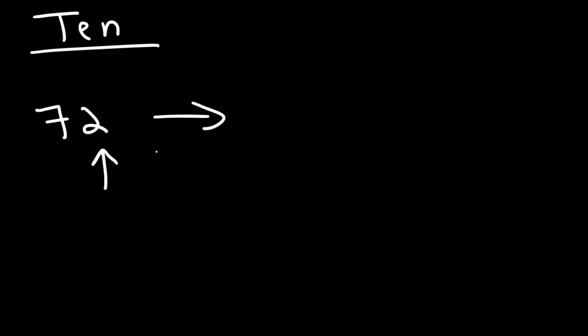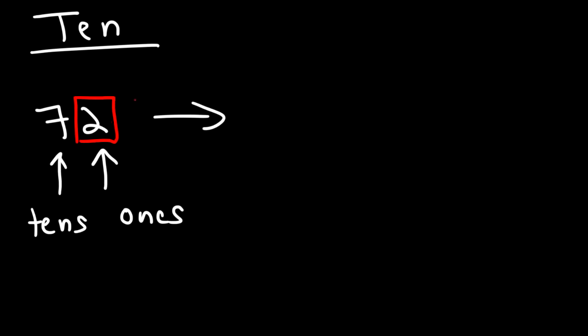This represents the ones place and this is the tens place. So if we're rounding to the nearest ten, the two is going to change to a zero. Now you look at this number — if it's five or more then you need to round up; if it's four or less you round down. Since two is less than five we're going to round down to 70, as opposed to going up to 80.